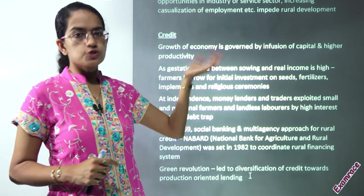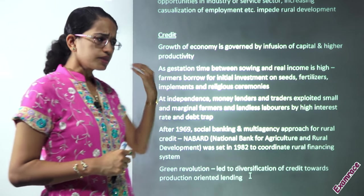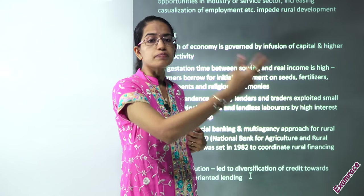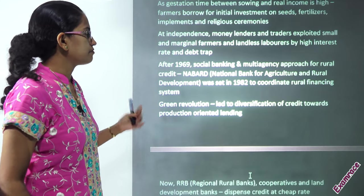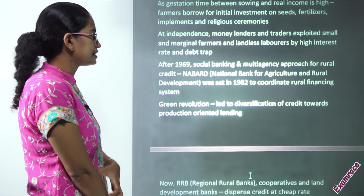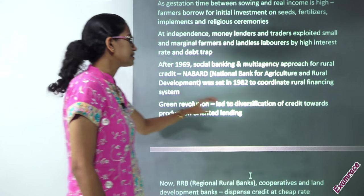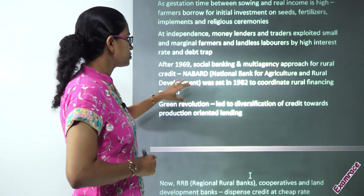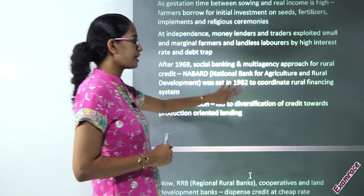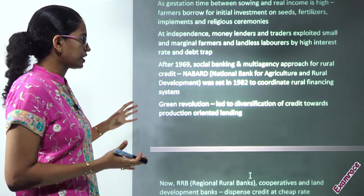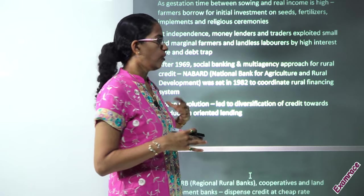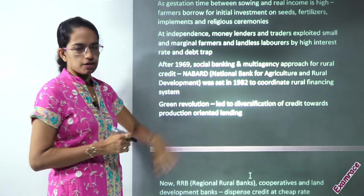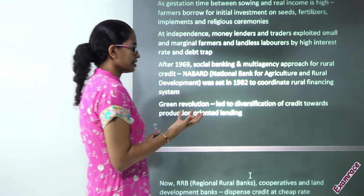Bringing up literacy levels so that farmers cannot be cheated, and providing reasonable credit agencies besides moneylenders or the middlemen — the government came up with the idea of social banking in 1969. NABARD was established — that's the National Bank for Agricultural and Rural Development — set up in 1982 to coordinate rural financing. So in 1969 we proposed the idea of rural credit through social banking, and in 1982 NABARD was established.